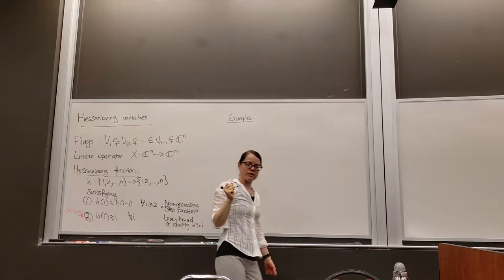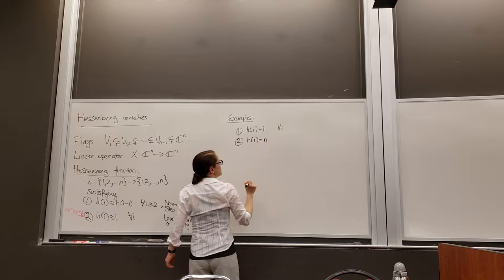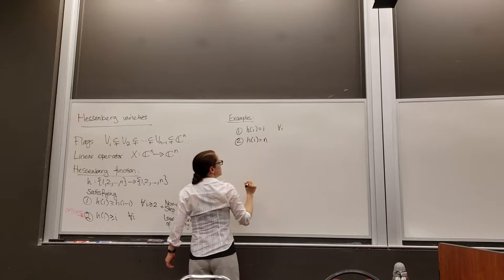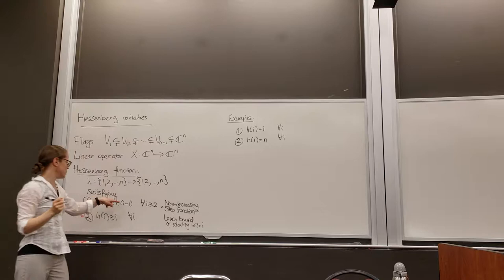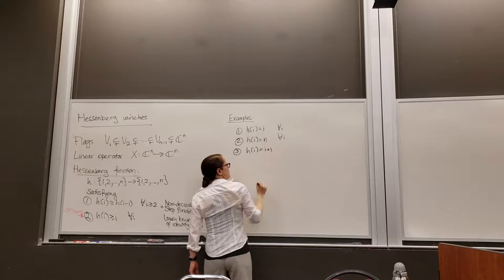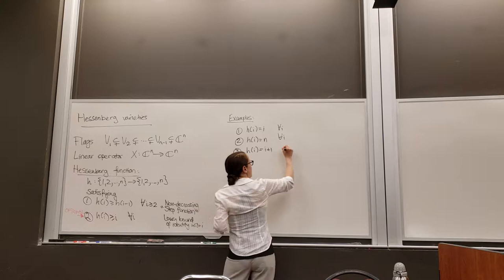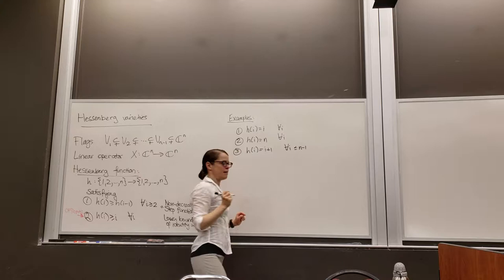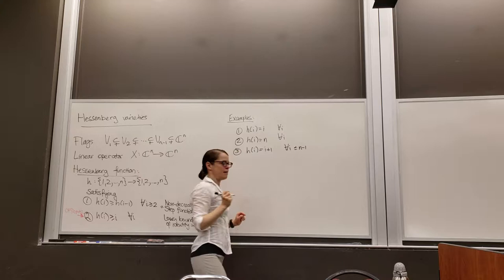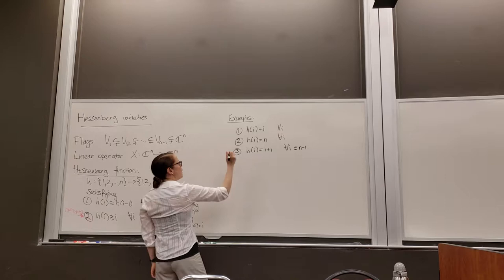Let's give a couple of examples of what these Hessenberg functions could be. One: we could take h of i equals i for everything — that works fine. Another: h of i equals n for all i — also perfectly good, since h of i is always non-decreasing and always above i. A third, substantively different example: h of i equals i plus 1, for all i less than or equal to n minus 1. All of these satisfy the non-decreasing condition and stay above h of i equals i.